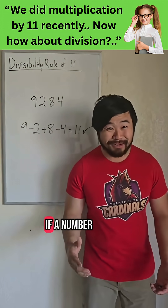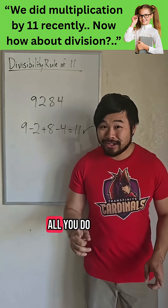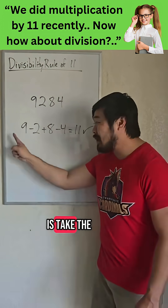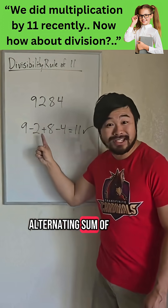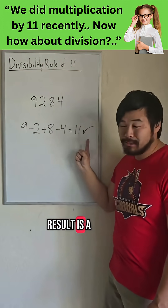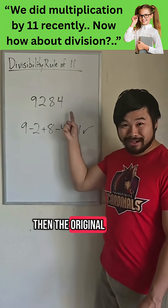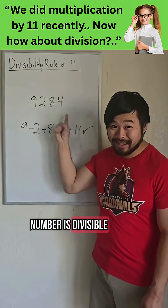There's a cool way to see if a number is divisible by 11. All you do is take the alternating sum of the digits, and if the result is a multiple of 11, then the original number is divisible by 11.